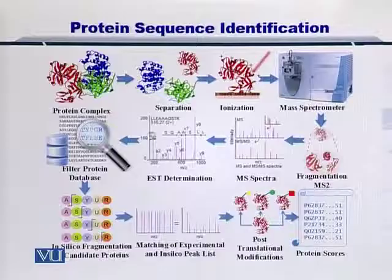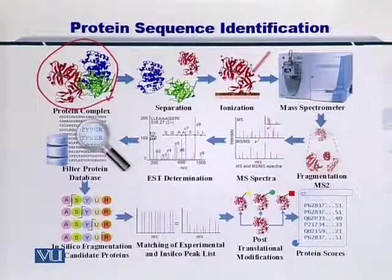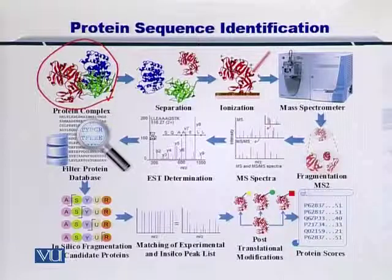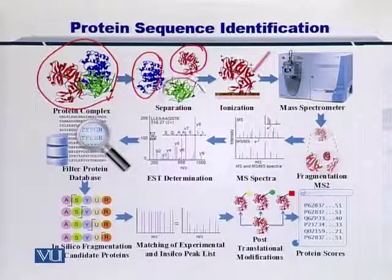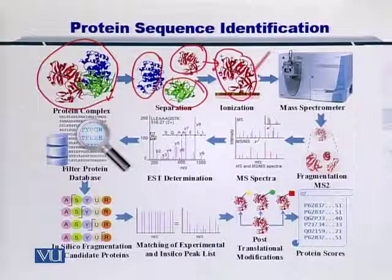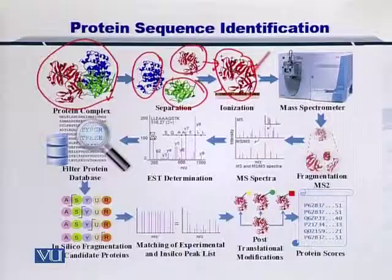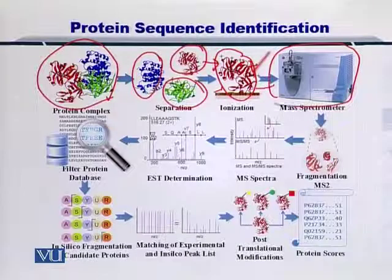Let's take a look at this diagram. Here in the first step, you have the entire protein mix. There may be more than one protein in the sample, and therefore you need to separate them into the individual proteins. The proteins have been separated and then you select one single protein for onward analysis. You have to charge this protein in order for it to move within the magnetic field, so you need to impart a positive or negative charge on the protein.